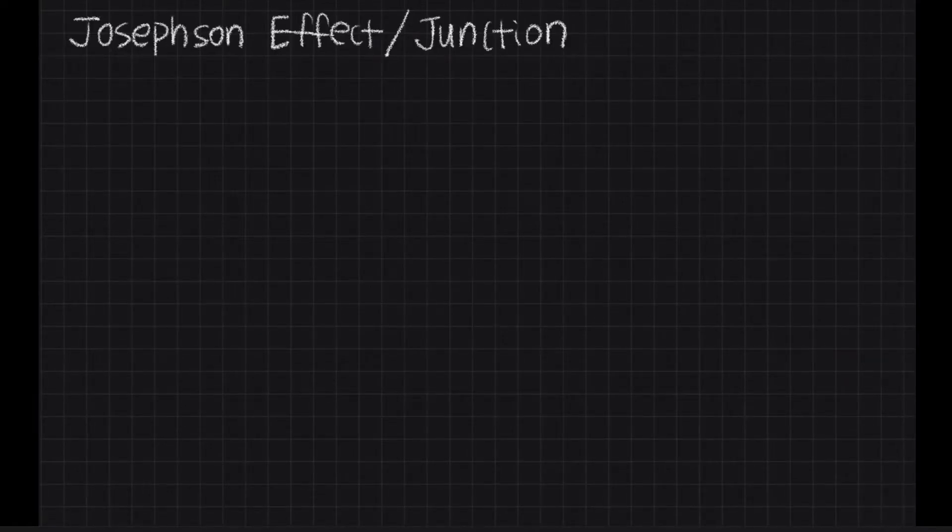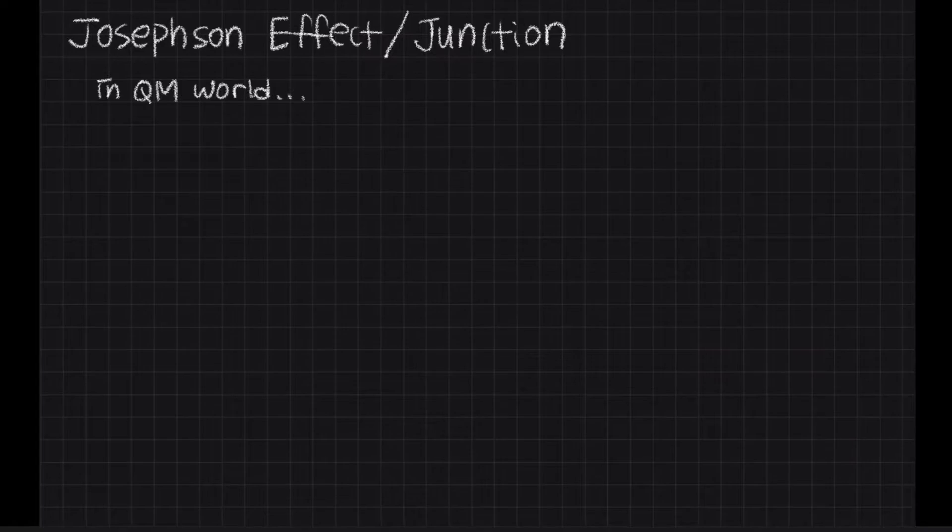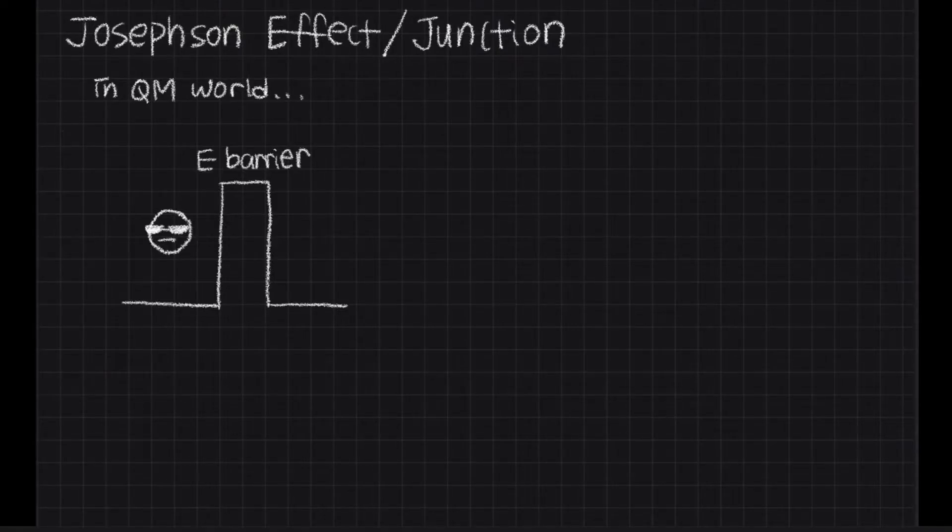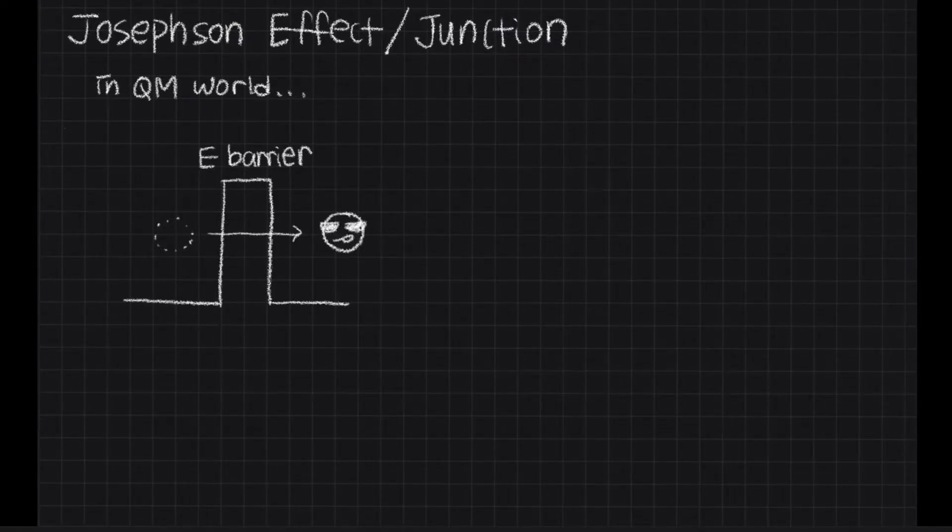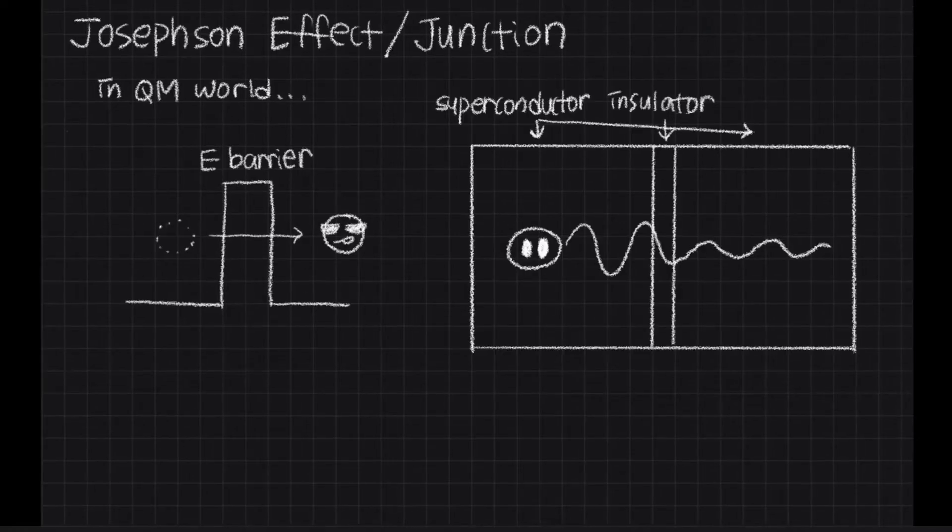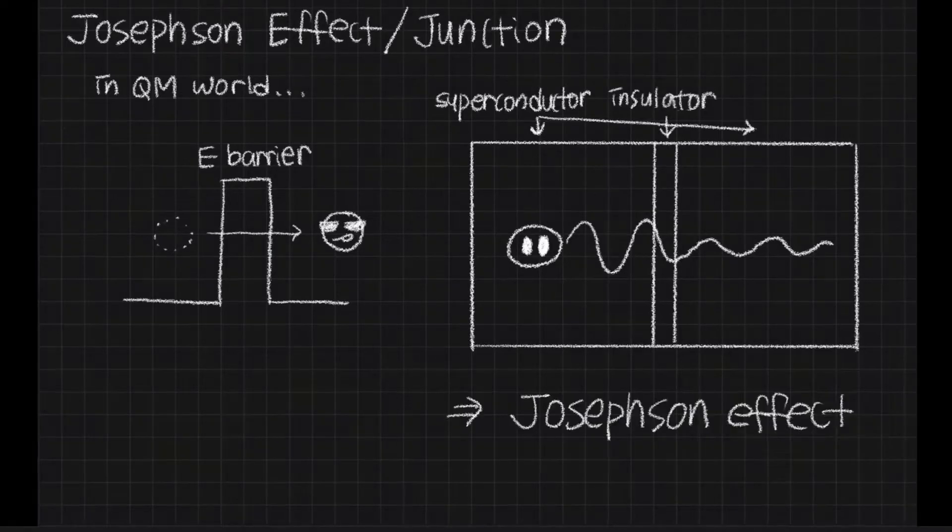Second, Josephson effect. In our quantum world, there is a possibility that particles pass through an energy barrier, and it is called quantum tunneling effect. When there is a thin insulator between two superconductors, the Cooper pairs pass through the insulator's weak link and induce corresponding current. This phenomenon is called Josephson effect, and the junction is called Josephson junction.